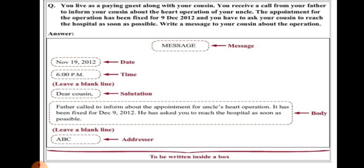In this slide you will see the format plus the sample answer. First, write the word 'MESSAGE' — you may write it in capital or bold letters. To the left side of your page, write the date and time, leave a blank line, then write a salutation like 'Dear Cousin.' Then write the body of the message: 'Father called to inform about the appointment for uncle's heart operation. It has been fixed for December 9, 2012. He has asked you to reach the hospital as soon as possible.' After that, leave a line, write your name, and put the whole thing in a box.